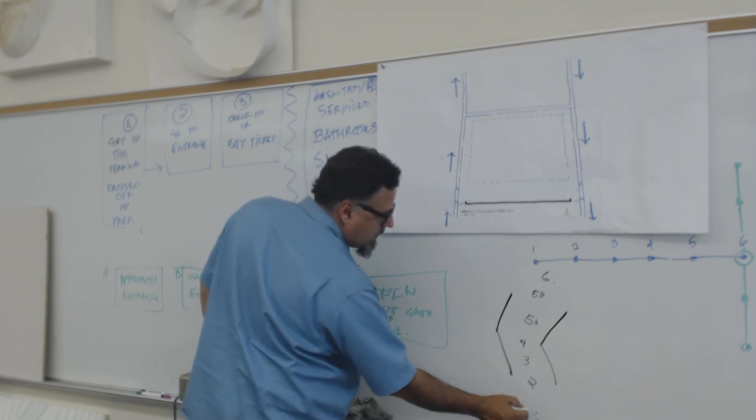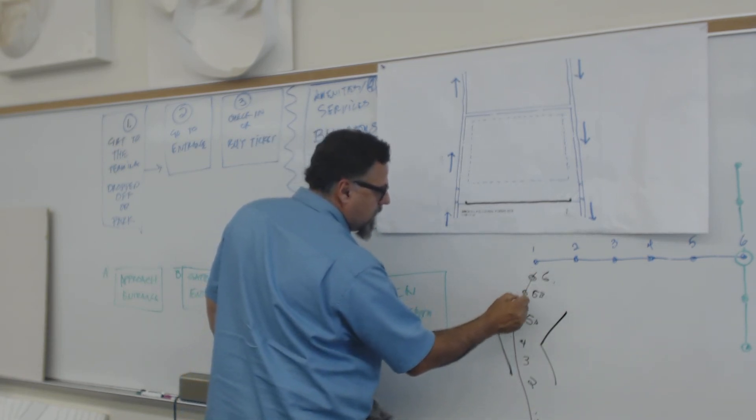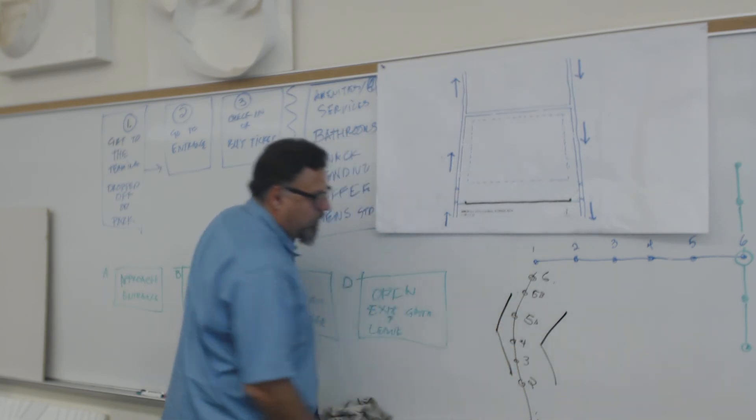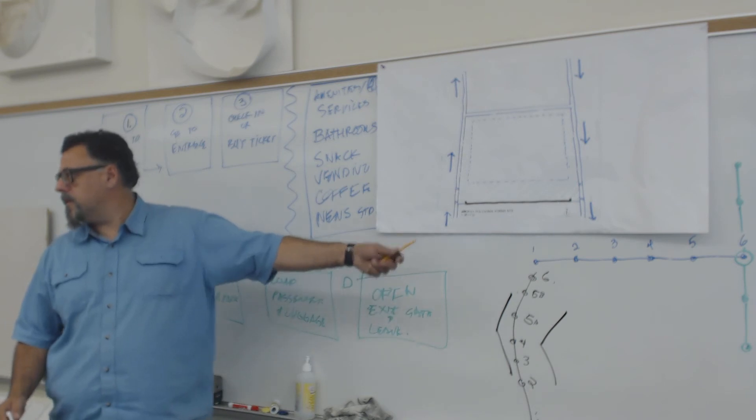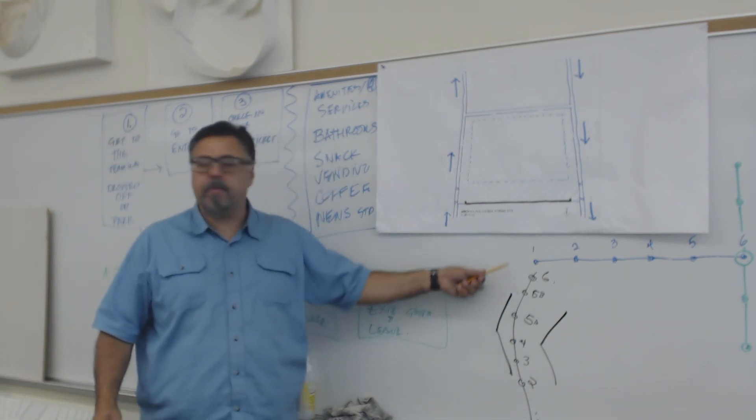So notice that it's a linear sort of condition, right? One comes before two, comes before three, comes before four. So one of the ways that you can do that is to simply run a line through like that. But there's other ways to go about doing the same thing.